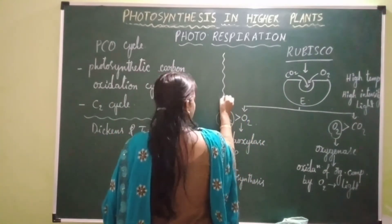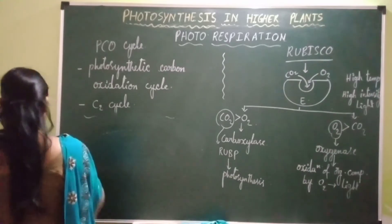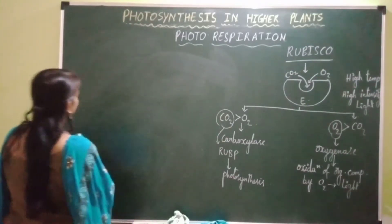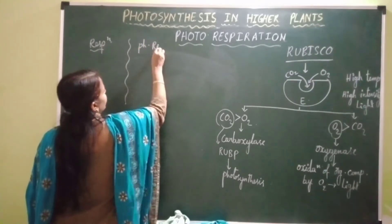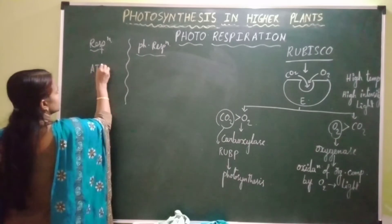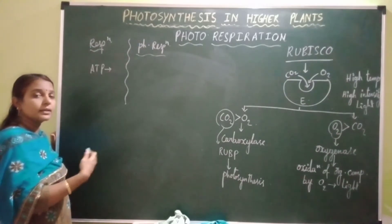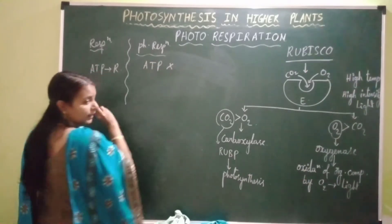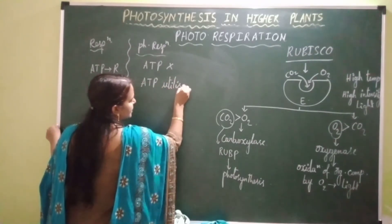Let's study some differences between respiration and photorespiration. In case of respiration, there is oxidation — breakdown of organic compounds with the release of energy in the form of ATP. But in case of photorespiration, there is no release of ATP. Instead, there is consumption — utilization of ATP.